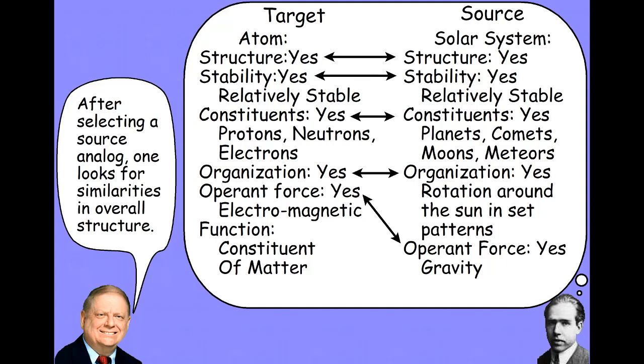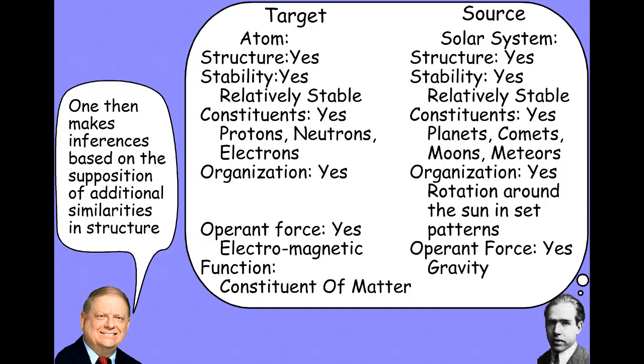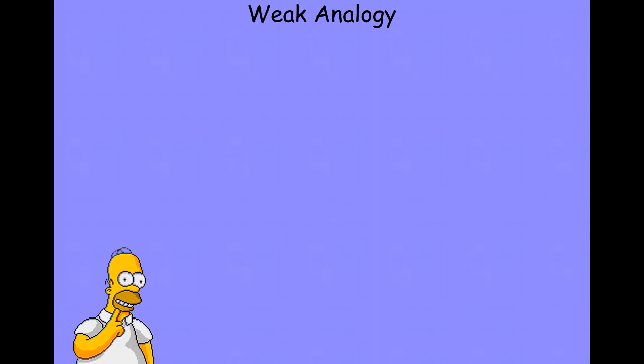And now, what we want to do, because we've seen enough similarities to think that there are more to be discovered or inferred, we make those inferences. We base our inference on a supposition that there are other relevant similarities. In particular, when we look at organization, the structure, we see that the solar system has an organization where there are rotations of planets, moons, comets, and so on, in set patterns around the sun. And so, we make an inference that electrons rotate around a nucleus in set patterns. We extrapolate between our source and our target analogy. And this is a sort of abstract theoretical approach to analogical reasoning that people like Thagard suppose is really operant when we make these sorts of analogical inferences that we do. We probably don't do it nearly as systematically or as well as Thagard's model, or at least the example I gave you might suggest.